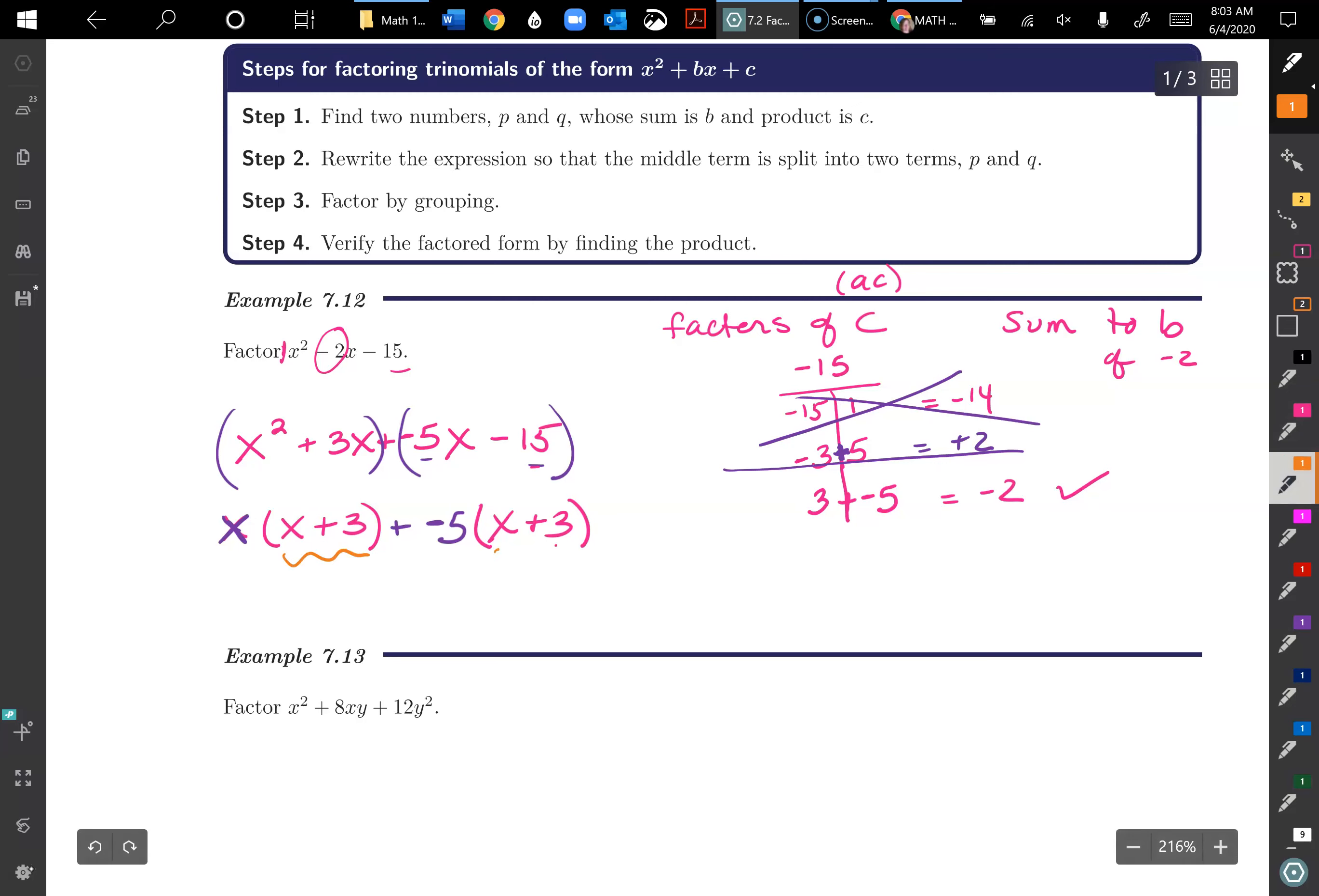Now I have a GCF here of x plus 3, so I'm going to pull that out just like we did before with our factor by grouping, and then what's left goes here, x minus 5. And that is my result. Then we want to verify. So we're going to do x times x is x squared plus negative 5x plus 3x minus 15 does in fact give me x squared minus 2x minus 15. So that works. So you always have to check for that middle term.